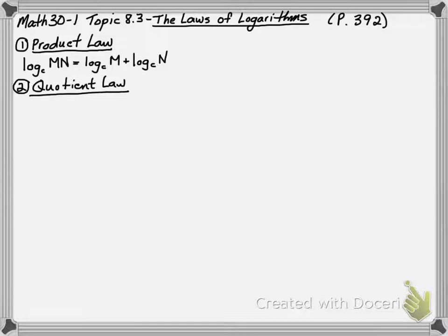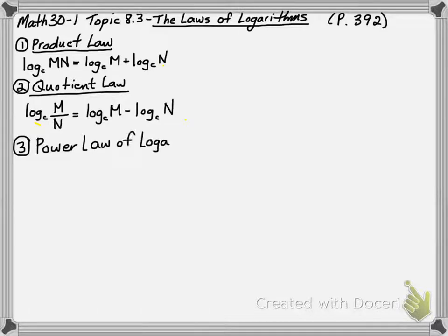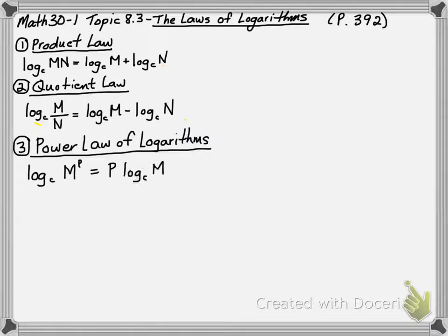The second law is called the quotient law. The log of m divided by n is the log of m minus the log of n. Lastly, the power law of logarithms says that the log of m to the power of p is going to equal p times the log of m.